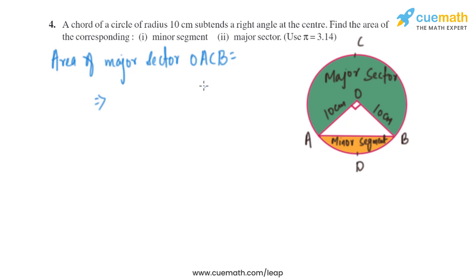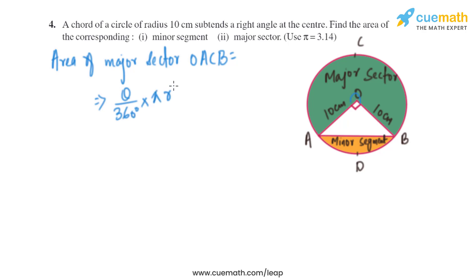Let's find the area of the major sector first — that is sector OACB. If the minor angle is 90 degrees, then the major sector angle is 360 minus 90, which equals 270 degrees. The formula to find the area of a sector is theta divided by 360 degrees, multiplied by pi r squared.